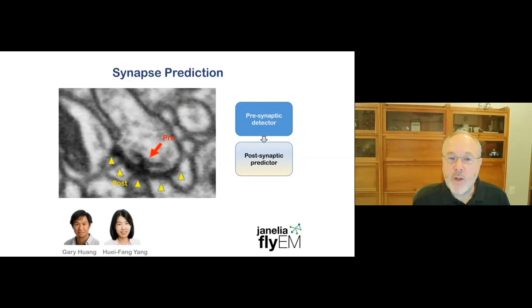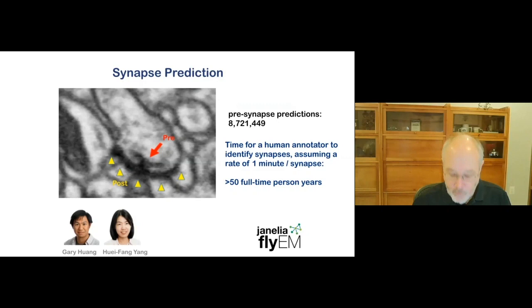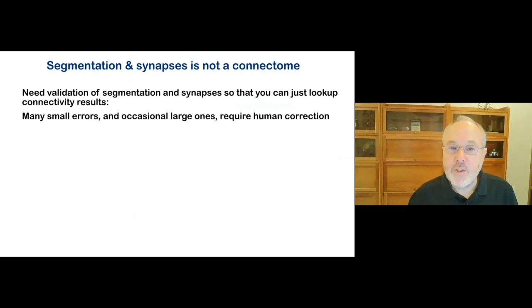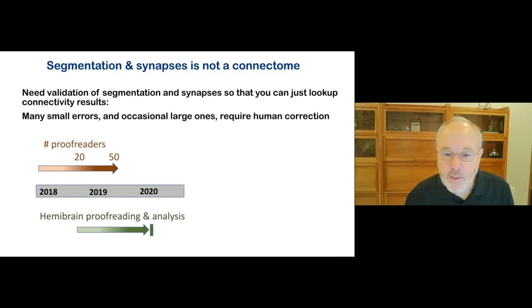The result of segmentation looks like this in 2D with individual neurons having different colors from their neighbors. Synapses are also identified by machine vision in a separate process. There are nearly 9 million presynaptic terminals in the hemibrain, so machine vision is essential for predicting the synapses as well. Segmentation plus synapse prediction does not generate a finished connectome.